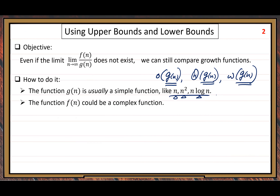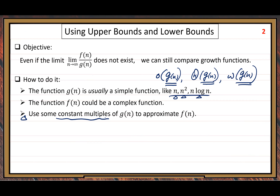The f function at the numerator could be a relatively more complex function. The question is how do we use g function to describe f function. The idea is to use some constant multiples of g function to approximate f function — making it as close as possible to describe f.